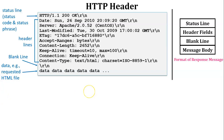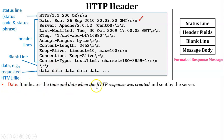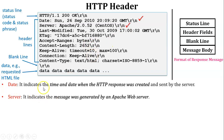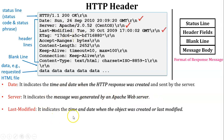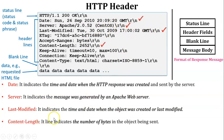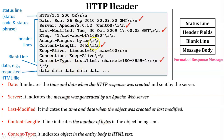Now let's discuss some of the header fields in the real-time example. The date field indicates the time and date when the HTTP response was created and sent by the server. The server field indicates the message was generated by an Apache web server. The last modified field indicates the time and date when the object was last modified. The content length field indicates the number of bytes in the object being sent — the size of the object. The content type field indicates what type of content is present in the message body, which here consists of HTML text.